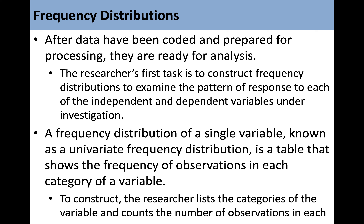After data have been coded and prepared for processing, they are ready for analysis. A researcher's first task is to construct frequency distributions to examine the pattern of response to each of the independent and dependent variables under investigation. A frequency distribution of a single variable, known as a univariate frequency distribution, is a table that shows the frequency of observations in each category of a variable. To construct it, the researcher lists the categories of the variable and counts the number of observations in each.